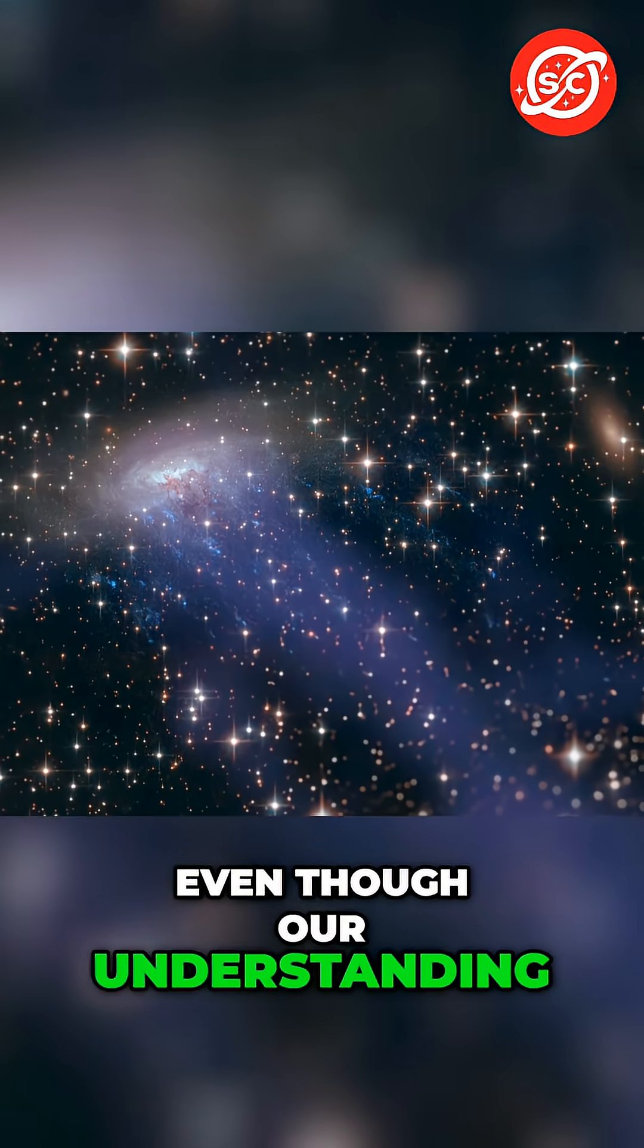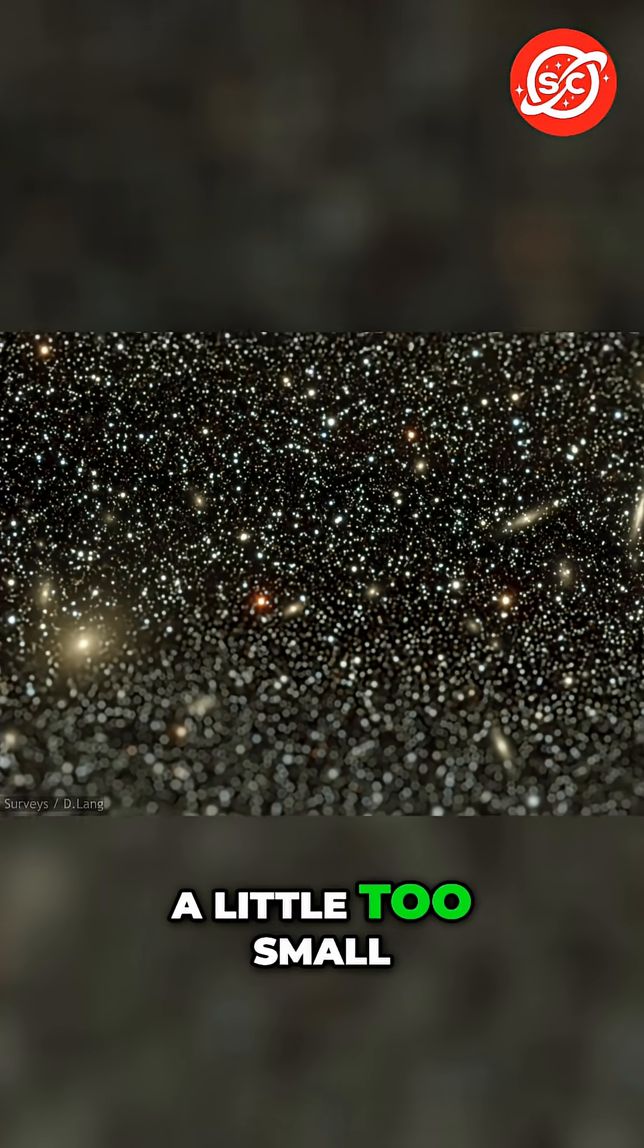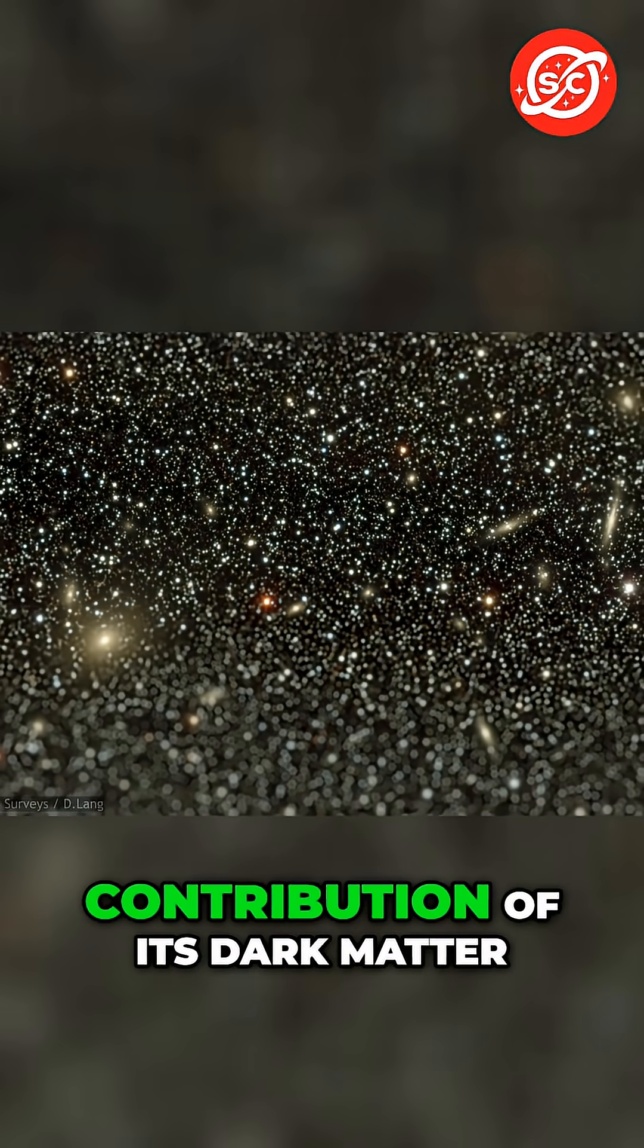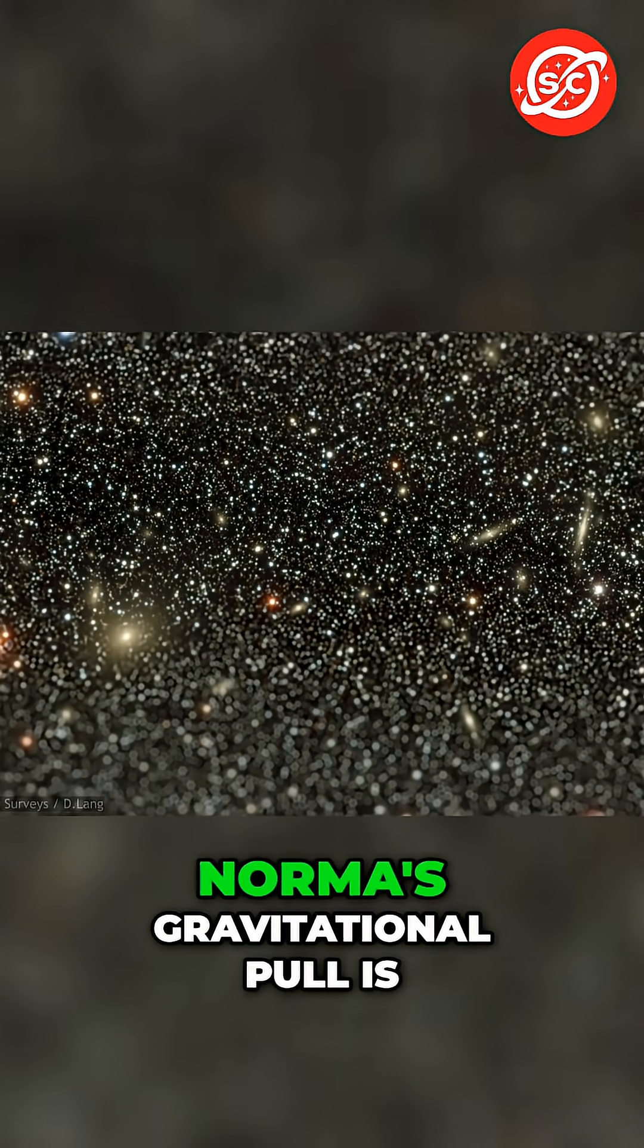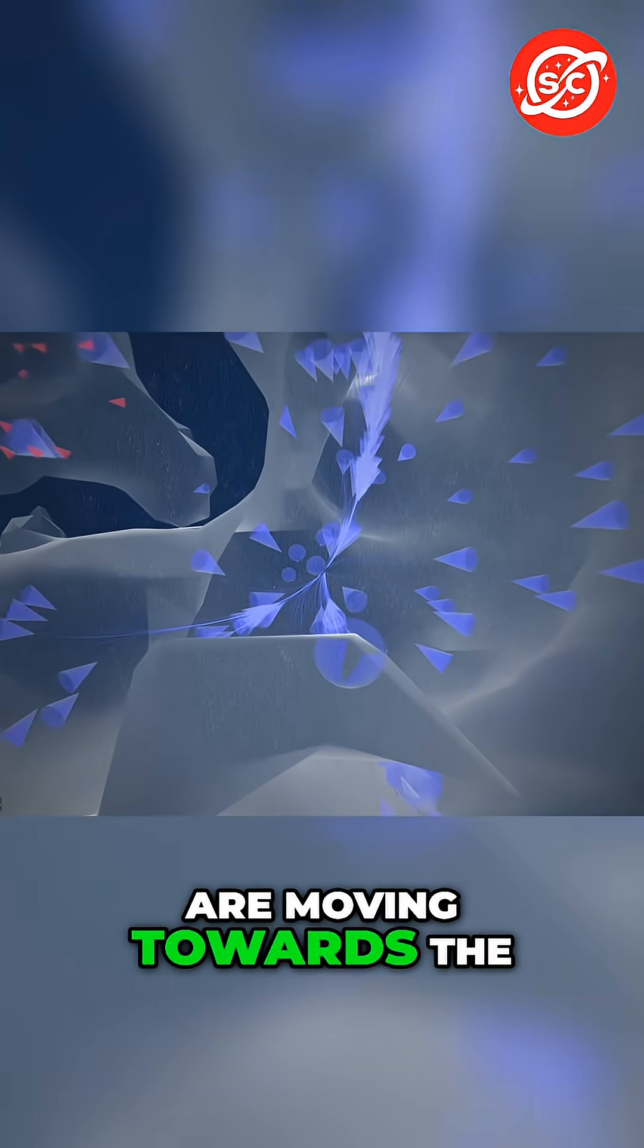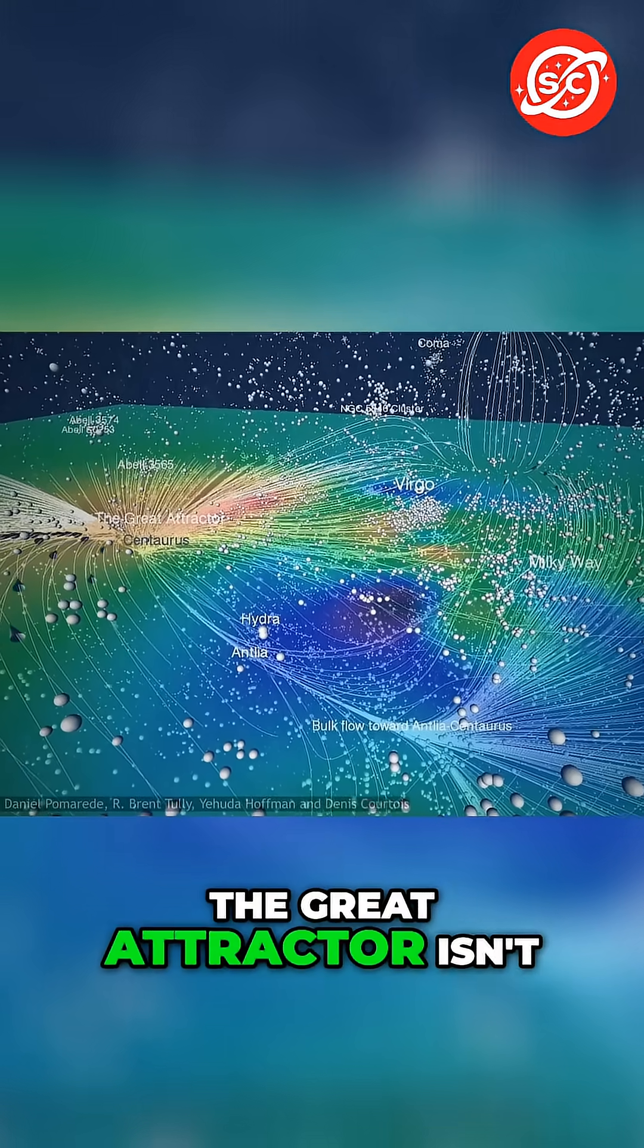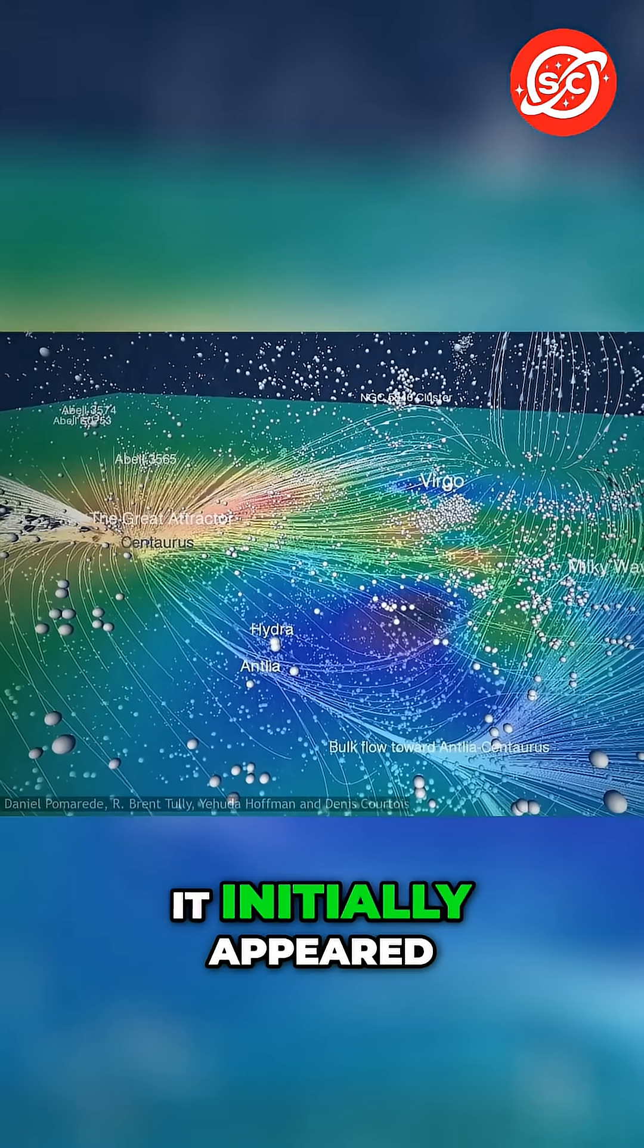For one, even though our understanding of Norma is vague at best, it appears to be a little too small. Even adding in the contribution of its dark matter, Norma's gravitational pull is not quite large enough to account for the speed with which we are moving towards the greater tractor. In other words, the greater tractor isn't quite as great as it initially appeared.